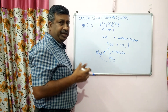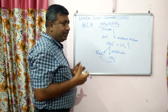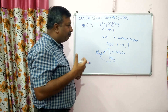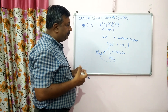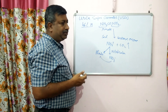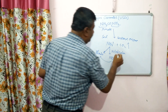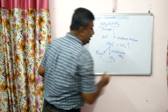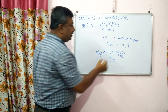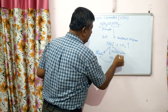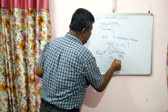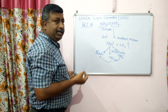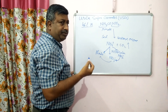The nitrification process is carried out by microbes — Nitrosomonas and Nitrobacter. First, ammonium is converted into nitrite by Nitrosomonas, and then nitrite is converted into nitrate by Nitrobacter.